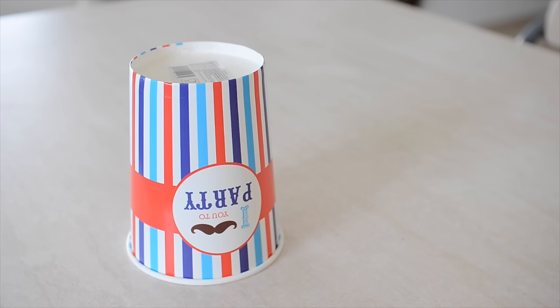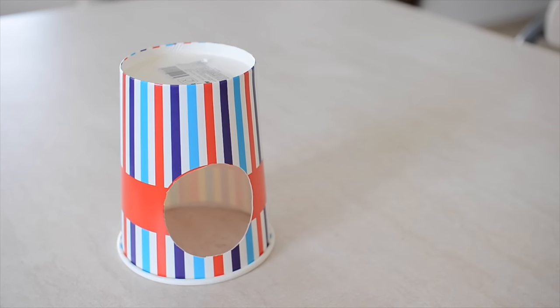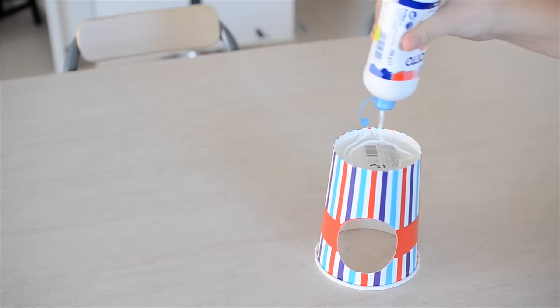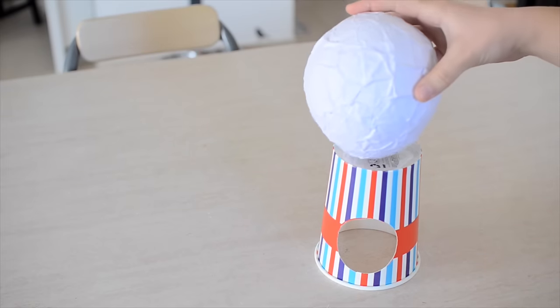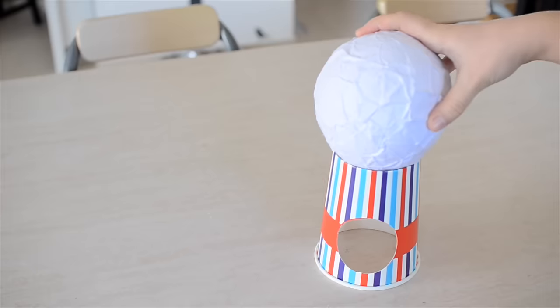Next, grab your paper cup, turn it upside down, and cut a large hole in the front for a doorway. Pop the paper ball on top with the little hole facing downwards and use the white glue to stick it in place.